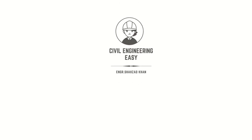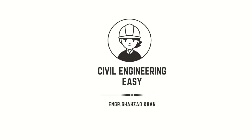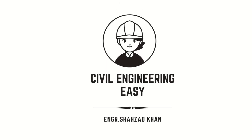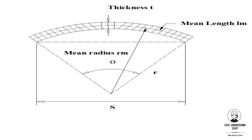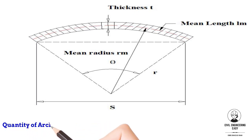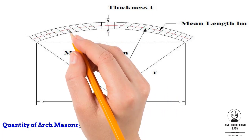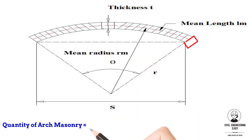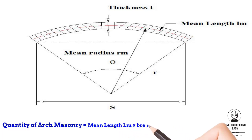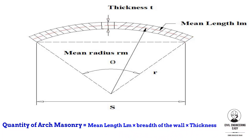Welcome back to my YouTube channel Civil Engineering Easy. Today I'm going to show you how to calculate the quantity of arch masonry. The quantity of masonry work in arch is calculated by multiplying the mean length of the arch by the breadth of the wall and by the thickness of the arch.